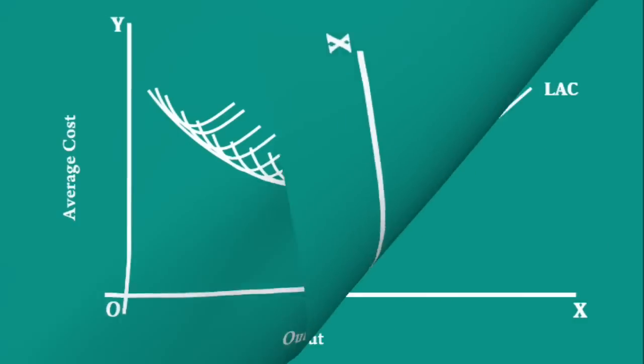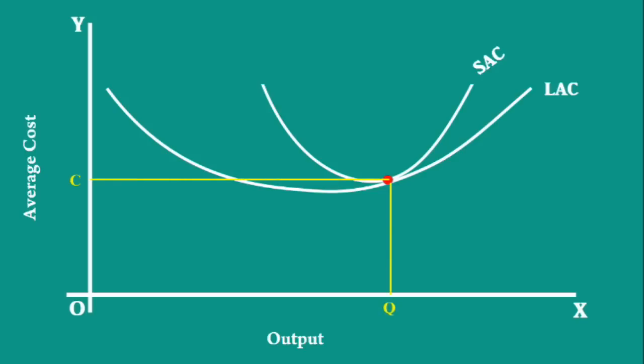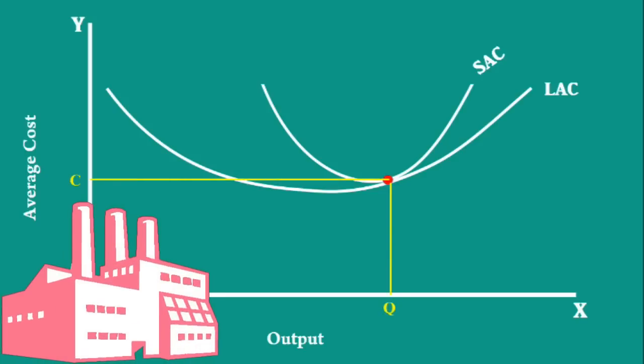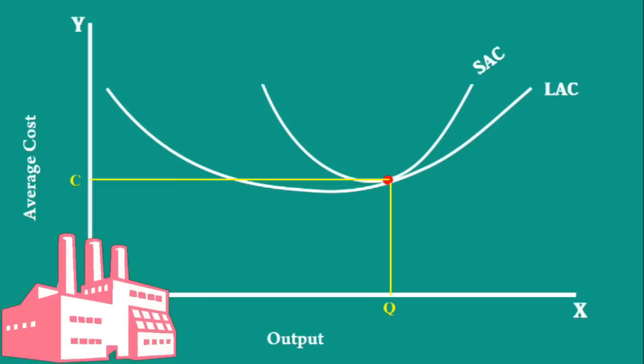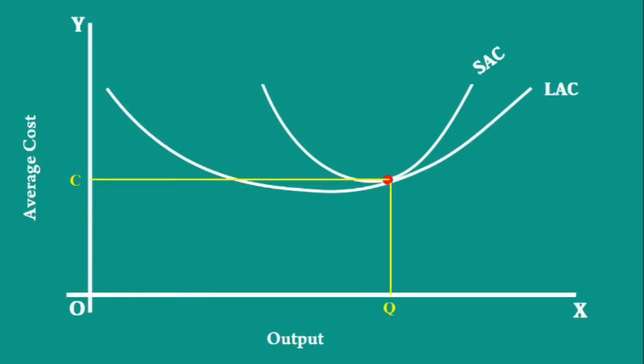So, a point on the long run average cost curve shows the plant size, output and the average cost. Please keep all these things in your mind when we try to find an answer for the given question.